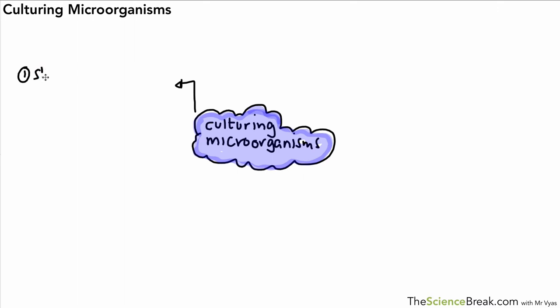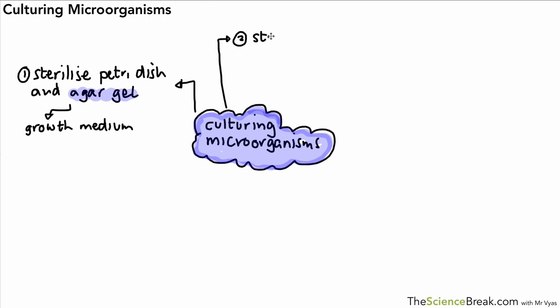Our first step was to sterilize the petri dish and the agar gel. The agar gel is sometimes referred to as growth medium, plural being growth media. We sterilize the dish and the agar gel, usually done with heat. Step two, we then sterilize our inoculating loop and that's done by passing it through a hot Bunsen burner flame and then we allow it to cool down for a few seconds.